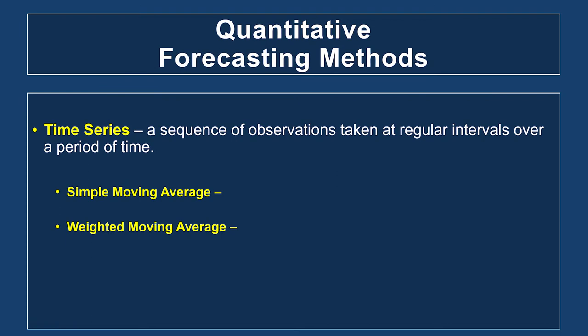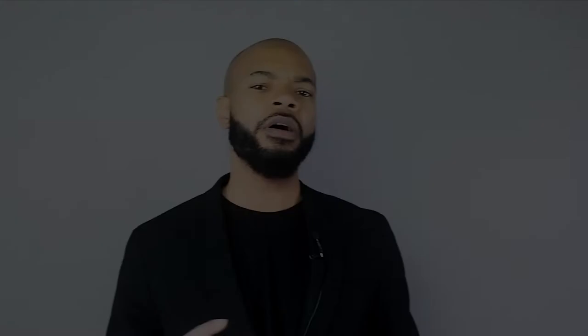Now let's talk about quantitative methods of forecasting. There are several forecasting models used in software programs that can get very complicated. I'm going to focus on time series methods — specifically the simple moving average and the weighted moving average. I'll also mention exponential smoothing and linear regression, though this is not an exhaustive list of all forecasting models.